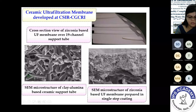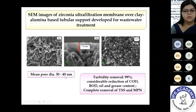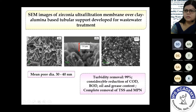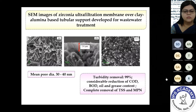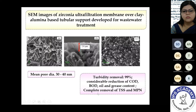Over this support, a zirconia-based ultrafiltration membrane layer is deposited. This micron-range thickness membrane layer is applied by single-step coating, with a mid-pore diameter of 30–40 nm. This membrane was applied for grey water treatment in the domestic sector, resulting in 99% turbidity removal, considerable reduction of COD, BOD, oil and grease, and complete removal of TSS and microorganisms (MPN).